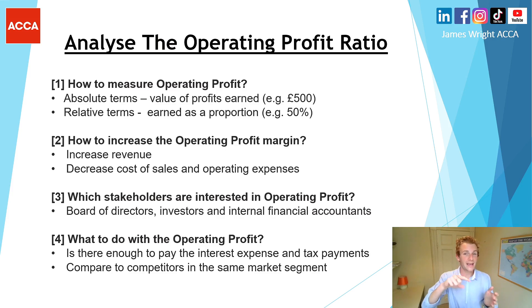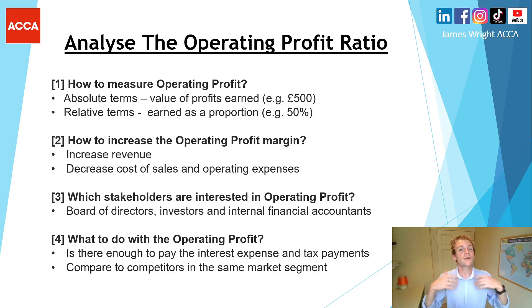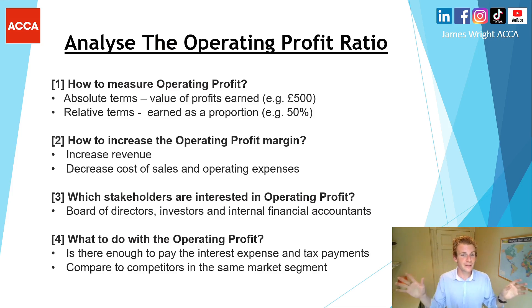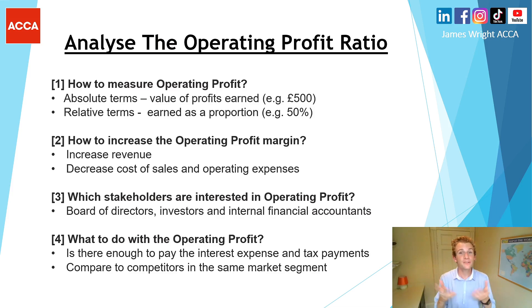In absolute terms, £500 is the actual value of profit on the income statement. In relative terms, the percentage shows it as a proportion compared to revenue, and you can compare these figures with the previous year's accounts or a competitor. To increase that operating profit margin from 50%, there are two key steps: first, increase revenue — perhaps by harnessing existing customers or exploring other revenue streams and product lines. Second, decrease the cost of sales and operating expenses to drive the margin up.